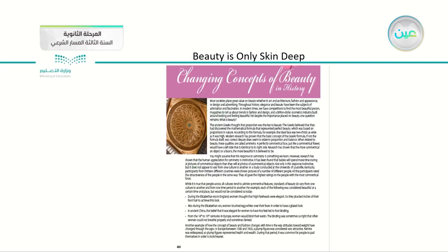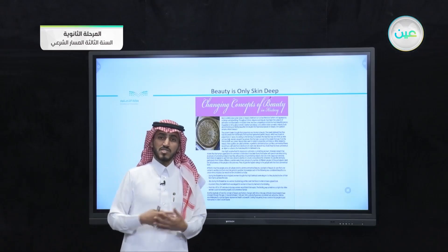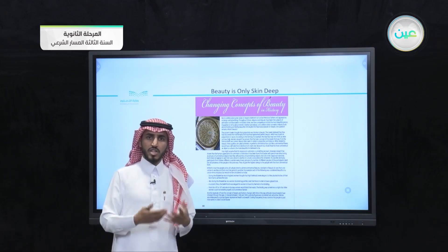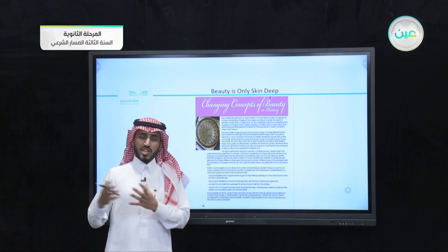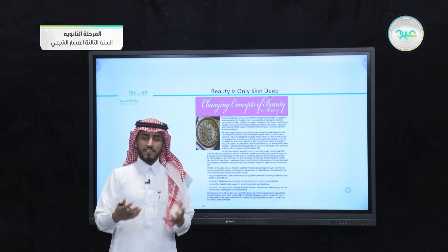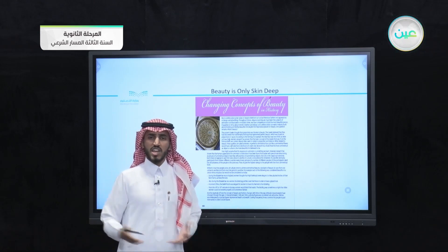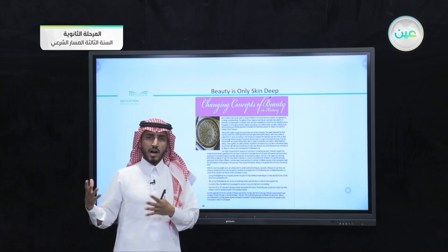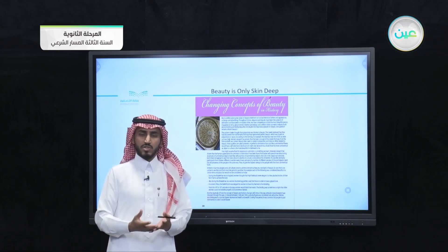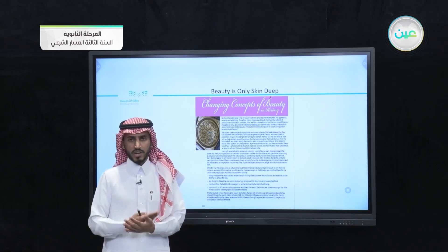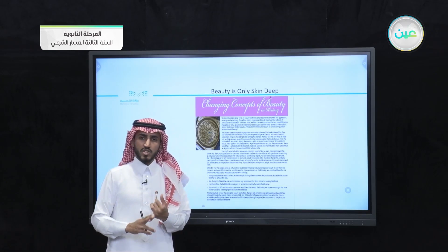We read this essay together and talked about the new meanings and ideas. We started the lesson by talking about strategies for reading an essay or any text. For example, we should start by skimming through the essay rather than reading everything, so we get a glimpse of what it's about and form a main idea of what we're going to read.